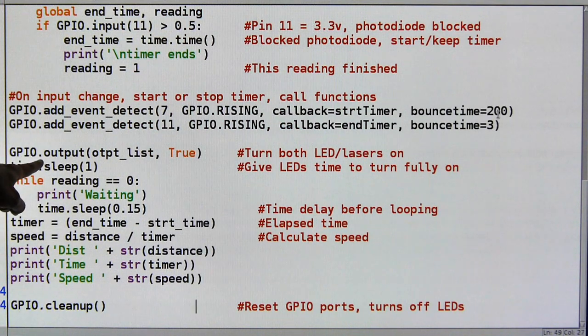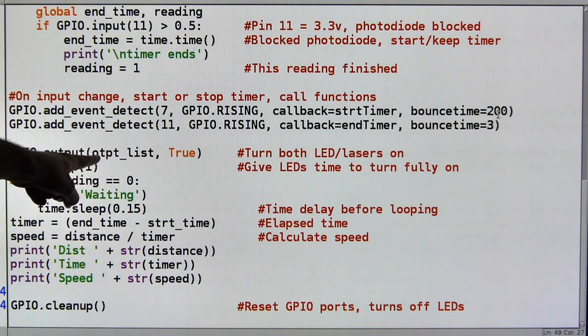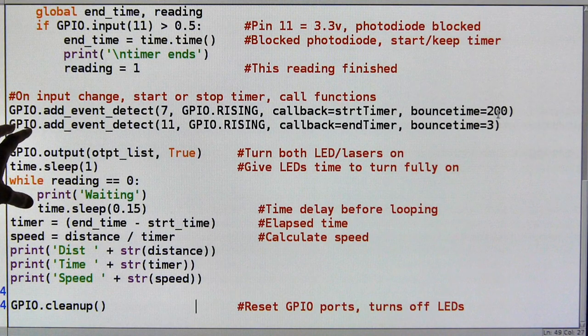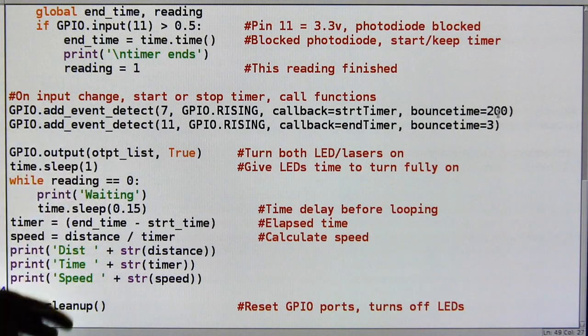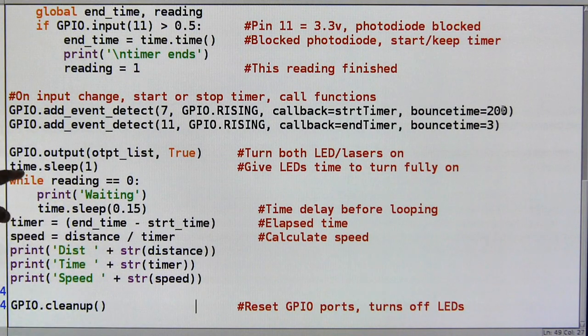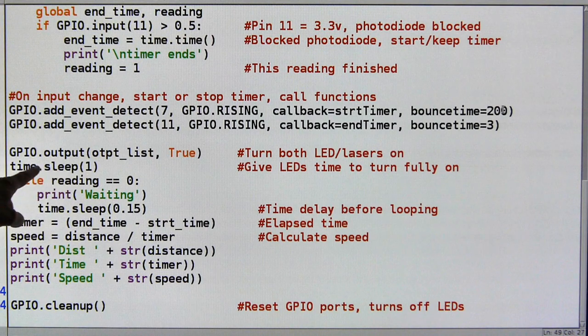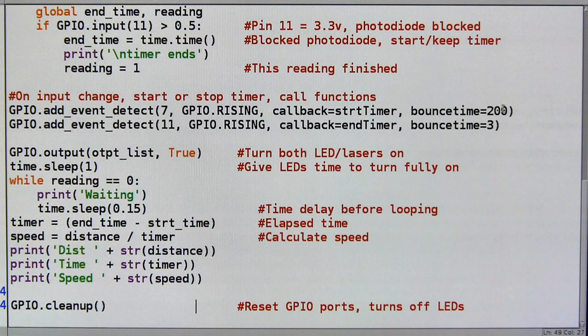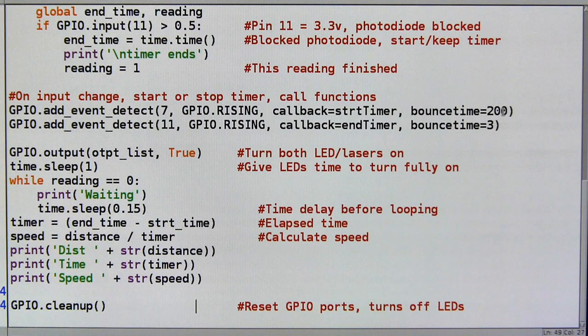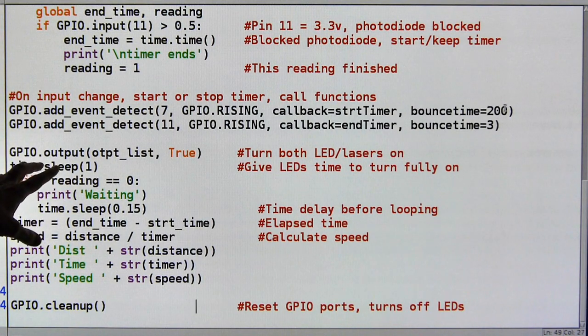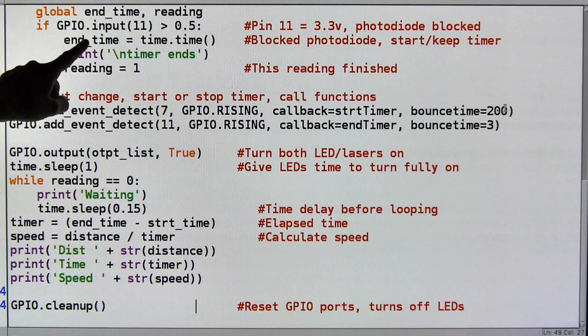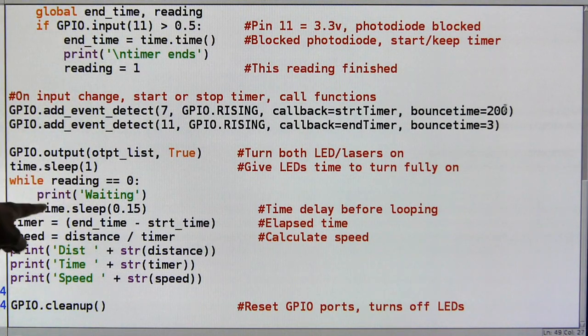And then down here I've got. This is the main software if you will. The main routine. And the first thing I do is I turn the output list to true. So I'm going to turn both my optical LEDs on. Or my lasers on. And then I'm going to sleep for a second to allow them to come to full power. Make sure I don't get a false hit at the beginning. And then I'm going to run this little loop. And all it's going to do is it's going to keep repeating this waiting and sleeping. As long as the reading is set to zero. In other words I'm waiting for the race to start. And as long as that's looping it means nothing's really happened. When I get an interrupt I'm going to jump up here to one of my routines and execute that. But otherwise I'm just going to keep looping and looping.